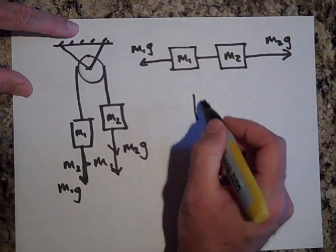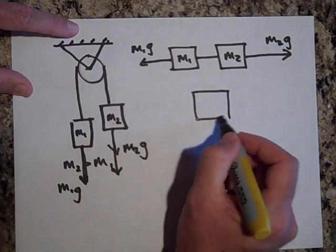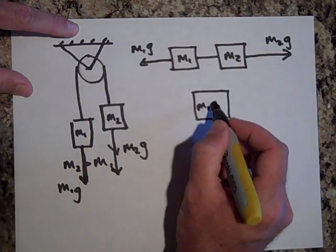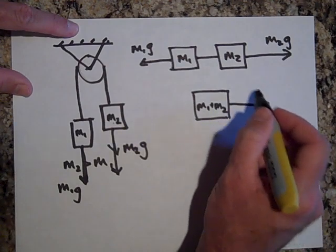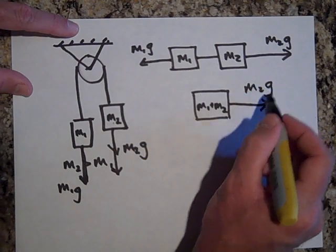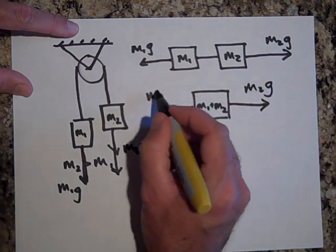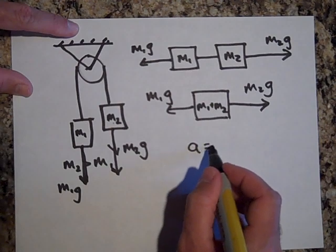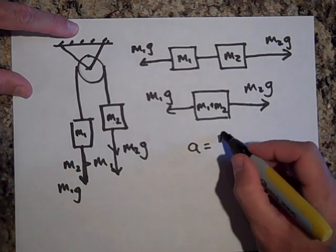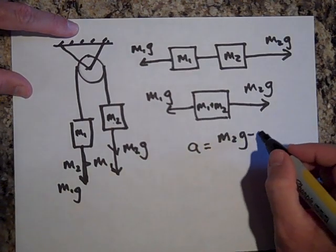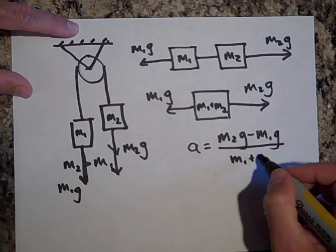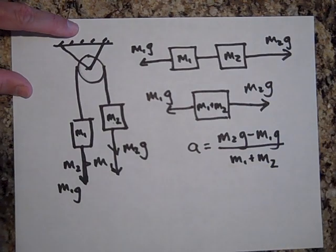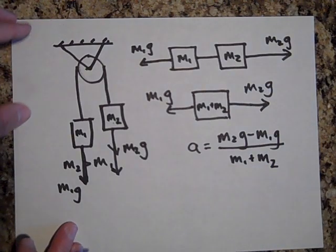And isn't this the same thing that is just one big system of M1 plus M2 being pulled with these two forces? So the acceleration of this system is going to be M2G minus M1G all over M1 plus M2. Okay, let's put some numbers in so I can show you what I'm talking about.